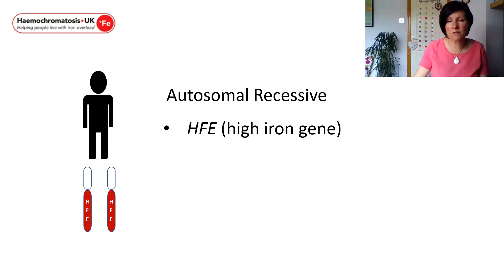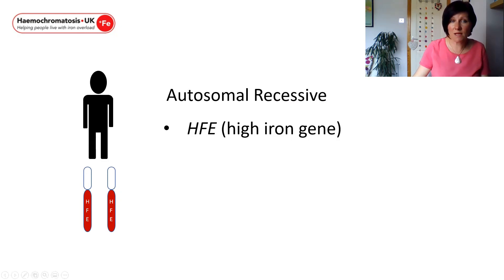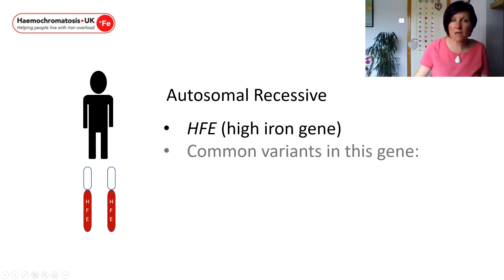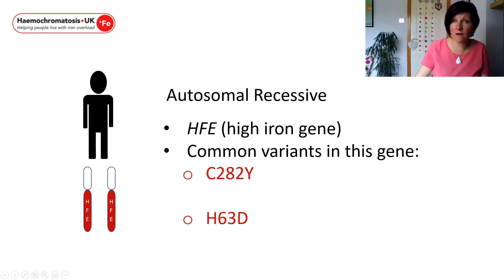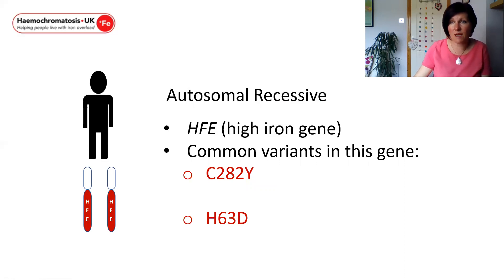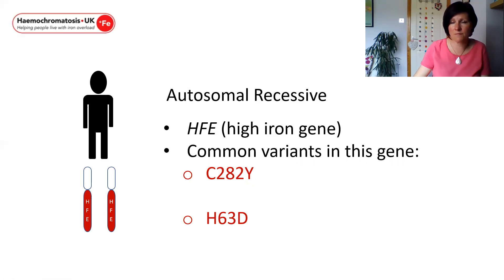In Hemochromatosis the gene most commonly affected is the HFE, or high iron, gene. On the slide we have a man with two copies of the HFE gene. There are two common genetic variants in the white Caucasian population: C282Y and H63D. C282Y is the more severe variant and can cause more severe phenotypes or symptoms, whilst H63D is a milder variant which often isn't associated with symptoms.